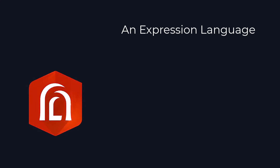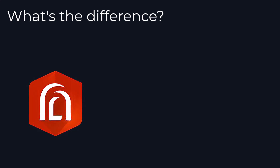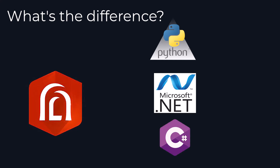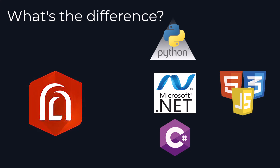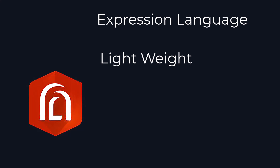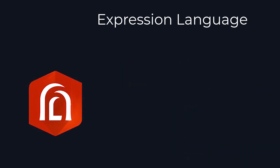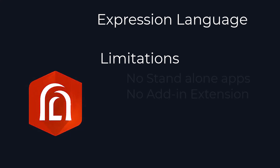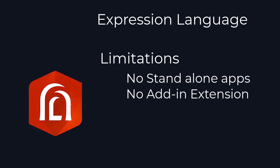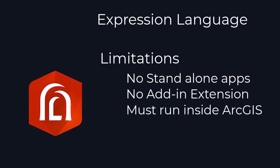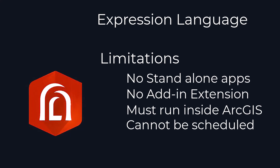Esri has said that Arcade is an expression language. How does it differ from other languages like Python, .NET, C#, HTML, or PHP? An expression language is lightweight when you compare it to scripting or development languages like those. This means it takes a lot less resources to run, but also means it has more limitations. For example, Arcade cannot be used to create a standalone application or even an add-on extension. Arcade also works only inside of ArcGIS based applications. You cannot schedule Arcade expressions to run outside of ArcGIS like you can with a Python script. However, when you do run it inside of the ArcGIS environment, it is often faster than a Python script.